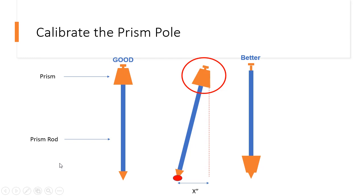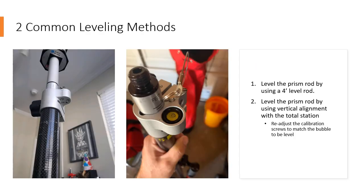So let's talk about how you can make this an accurate and level prism rod. To calibrate your prism rod and to make sure that it actually is indeed level, what you need to do is look at the bottom of the pole, and you'll notice some calibration allen screws that you can adjust and move that prism bubble that you see on the top.